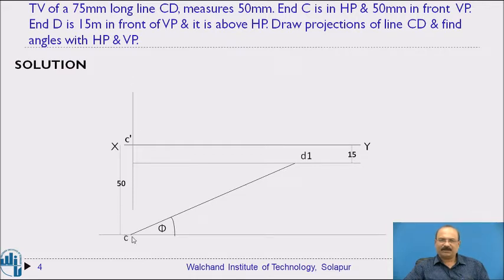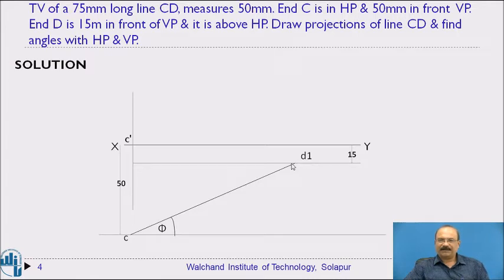Take the true length of 75 mm on the compass. Keep the compass at point C and cut it on the locus of point D — wherever it cuts, locate that as D1 point. This is written without a dash mark as D1. The locus of D is the line at 15 mm from the vertical plane, and we cut it with the 75 mm compass setting.